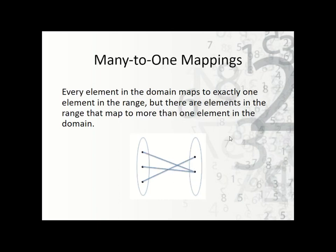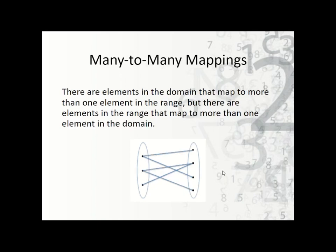Many-to-one means that there are elements in the domain that map to exactly one spot in the range, but multiple spots in the domain map to the same spot in the range. For instance, these two both go to this one point in the range — that's many-to-one. The last one is many-to-many, meaning multiples go in both directions — it's both many-to-one and one-to-many. Here this point maps to multiple places in the range and we also have one in the range mapping to multiples in the domain. That's many-to-many.